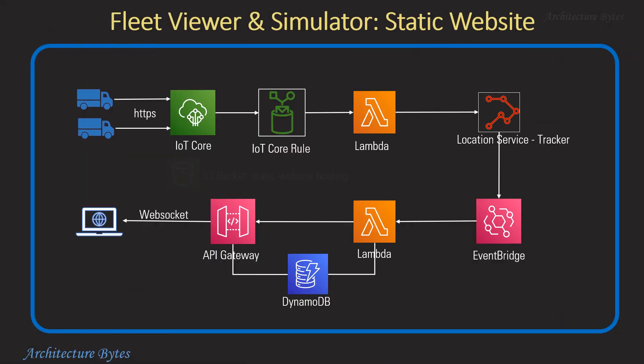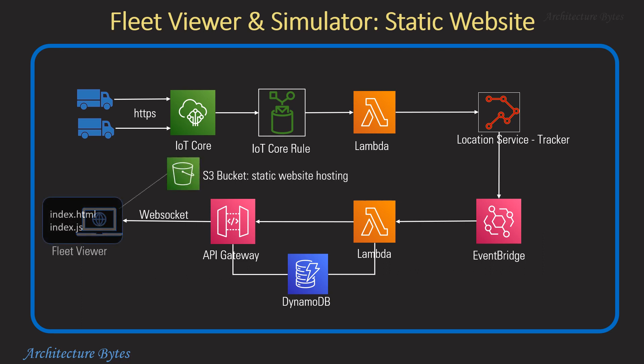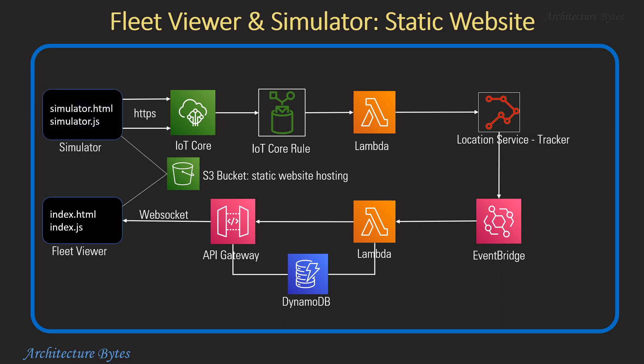Our fleet viewer application is a web page with an embedded map. It receives location updates from the WebSocket API Gateway and based on that places a truck marker on the map using a JavaScript library. In addition, we have a simulator web page with JavaScript that sends location updates for trucks to IoT Core to simulate movement of trucks. The simulator uses the AWS JavaScript SDK in a browser environment and uses HTTPS to communicate with IoT Core. Link to code is available in the description.